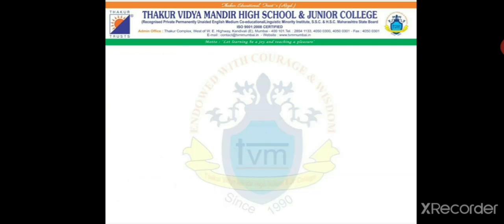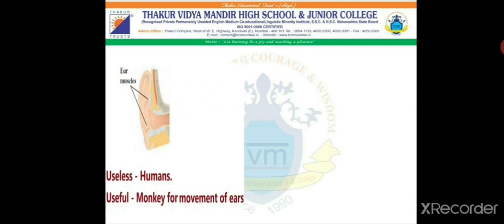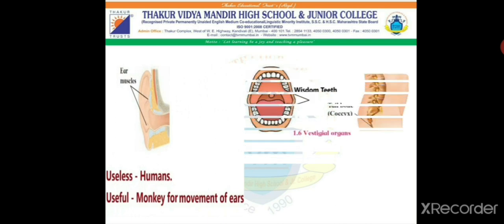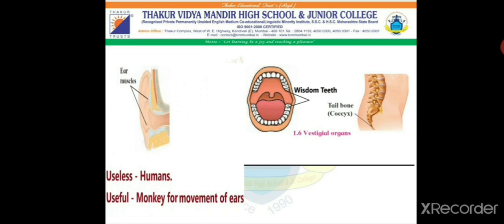The next example of a vestigial organ is ear muscles. Ear muscles are present in humans but are of no use — they are a vestigial organ. Whereas the same ear muscles are useful for monkeys for the movement of their ears. In the last picture you can see two more parts: first is the wisdom tooth, and the next is the tail bone, also called the coccyx. Both of these are of no use in humans, so they are called vestigial organs.